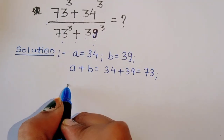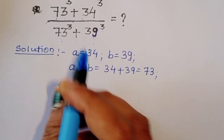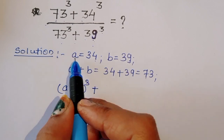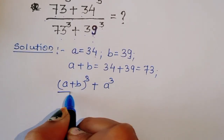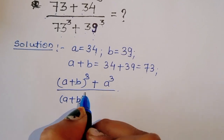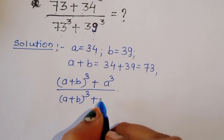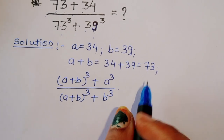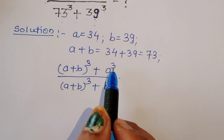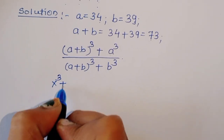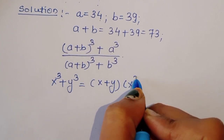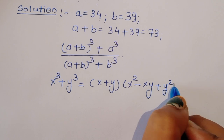Now let's work with A plus B. We can rewrite the expression as: (A+B)³ plus A³ divided by (A+B)³ plus B³, since the value of A plus B is 73, 34 is A, and 39 is B. Now, notice this is of the form X³ plus Y³. The formula for X³ plus Y³ is equal to (X plus Y) times (X² minus XY plus Y²).